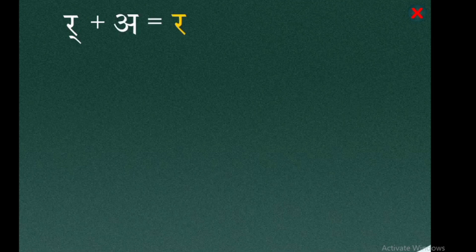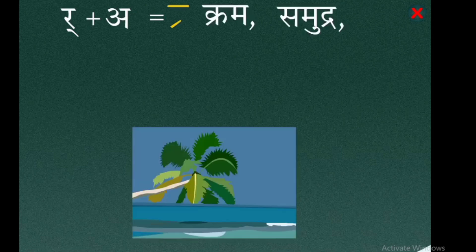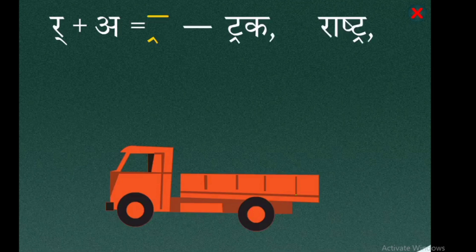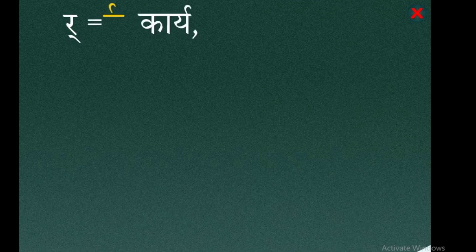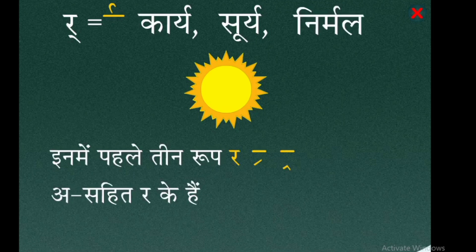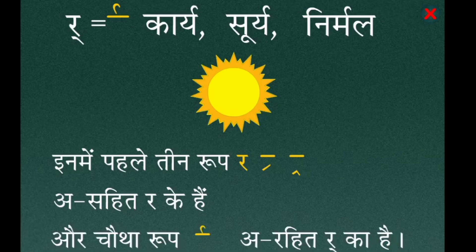र ke chaar roop: पहला — र + स्वर = र, jaise रतना, कमर, भारत। दूसरा — र + व्यंजन = रेफ (ऊपर), jaise क्रम, समुद्र, प्रणाम। तीसरा — र + व्यंजन (ट-वर्ग) = ट्रक, राष्ट्र, ड्रामा। चौथा — व्यंजन + र = र नीचे, jaise कार, सूर्य, निर्मल। Inmen pehle teen roop swar sahit र ke hain aur chautha roop swar rahit र ka hai।